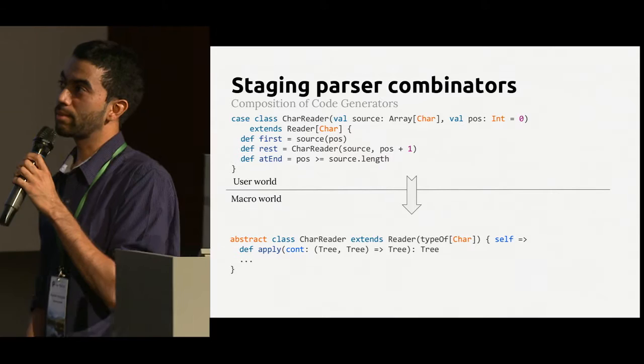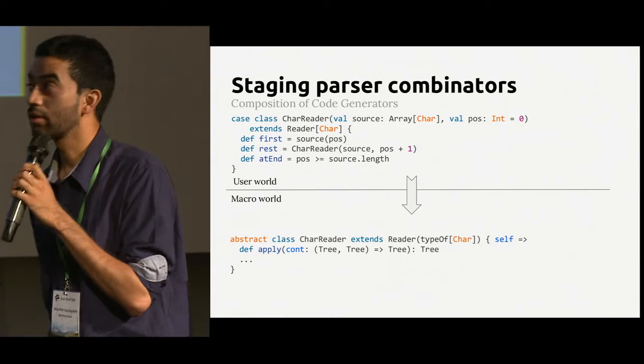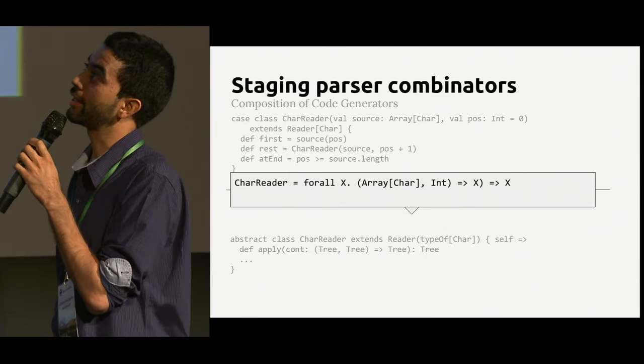We can systematically play the same trick for character reader as well. A character reader has a source and a position — it's another pair that takes an array of characters and an int and gives you some representation of this.